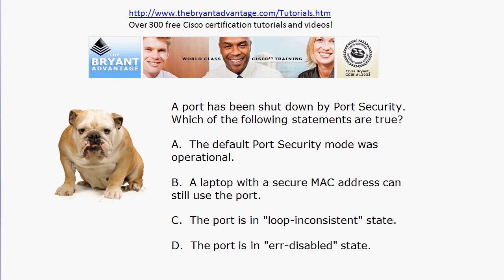Let's go from top to bottom with port security. A is true because the default port security mode is shutdown. B is false because if that had been the first device to hit the port, by default you'd be okay. But if the port has actually been shut down and then the device with the secure MAC address starts sending frames to that port, that is not going to reopen the port. You have to shut the port down and then reopen it, because the port will be in error-disabled state and you must manually reset it. So A and D are both true. There is a loop-inconsistent state you'll encounter in further studies, but that has nothing to do with port security.